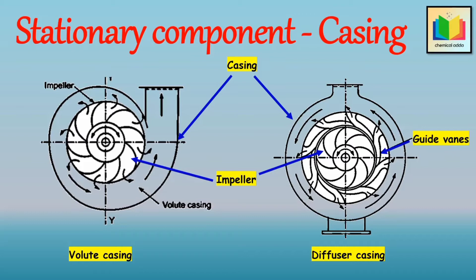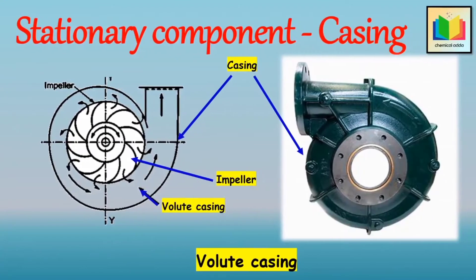Circular casings are used for low head and high capacity applications, but are seldom used. The second type is the volute casing, which builds a higher head. A volute is a curved funnel increasing in area to the discharge port. As the cross-sectional area increases, the volute reduces the speed of the liquid and increases its pressure. One main purpose of a volute casing is to help balance the hydraulic pressure on the shaft. The liquid discharged by the impeller enters a chamber of gradually increasing cross-sectional area toward the outlet, so fluid velocity decreases gradually, increasing fluid pressure. The volute thus converts kinetic energy into pressure energy, though some energy loss occurs due to eddy formation.